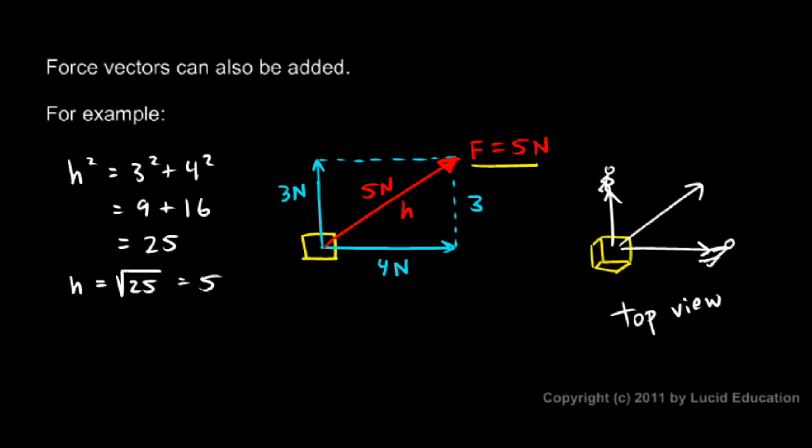This 5 newton force in this direction is the vector sum of the 3 and the 4 newton force. That vector by itself is equivalent to the other two together. Just like saying 2 plus 4 equals 6, the 6 is equivalent to the 2 and 4 together. If we add 4 newtons to the right and 3 newtons up, that's equivalent to having 5 newtons in this direction.